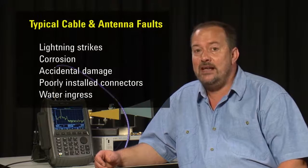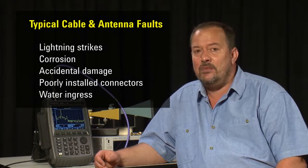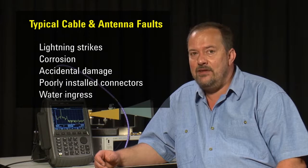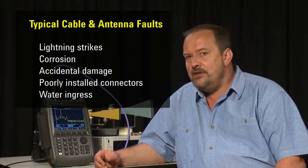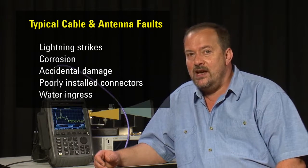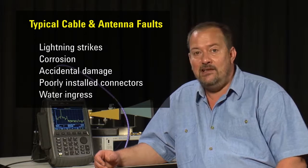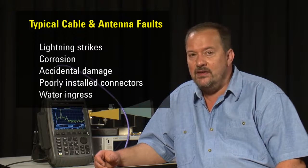Now let's consider another situation where we have been called out on site to troubleshoot a possible problem with an antenna installation. In this situation, we need to check the antenna, the cabling, and the connectors. All must be working properly for the antenna to transmit and receive signals effectively. Typical faults include antenna or cable damage, commonly caused by lightning strikes, corrosion, or accidental damage during maintenance, damaged or poorly installed connectors on the RF cable, or perhaps water ingress due to insufficient waterproofing on the connector joins.